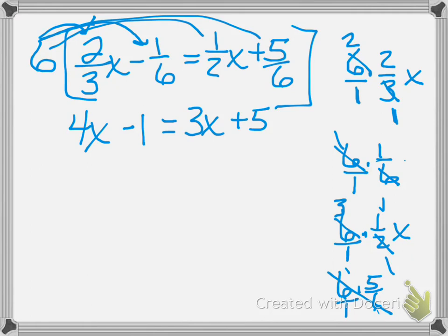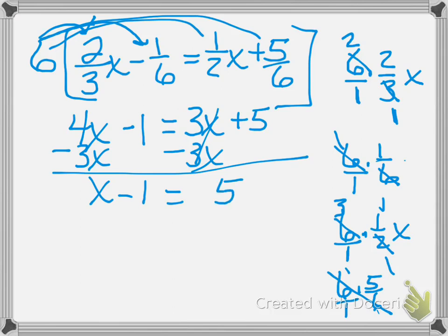No like terms on either side. I need to bring my variables together. Subtract three X. X minus one equals five. I've got to get my X alone, so add one. X equals six.